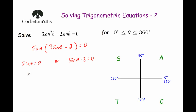Starting with sine β equals zero: rather than the CAST diagram, we can consider what the sine graph looks like. Between 0 and 360 degrees, sine β equals zero at zero degrees, at 180 degrees, and at 360 degrees.